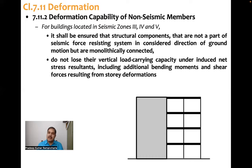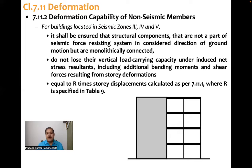So that means these members have to be designed to take that much deformation. They need not carry, they need not resist the lateral forces. So the deformation equals R times the story displacement. R is the response reduction factor because base shear is reduced, elastic base shear is reduced using this R value. That's why deformations have to be multiplied with R to get the realistic displacements.